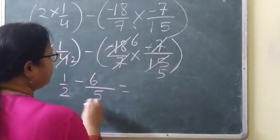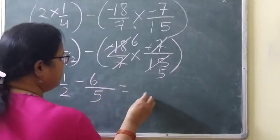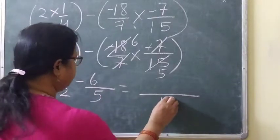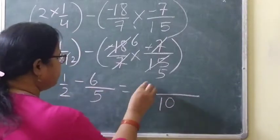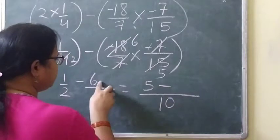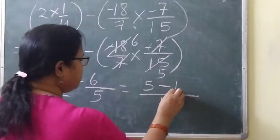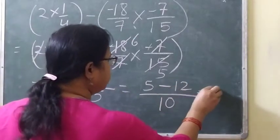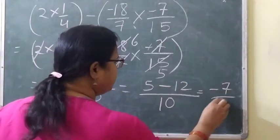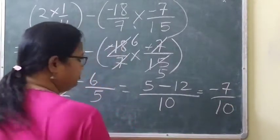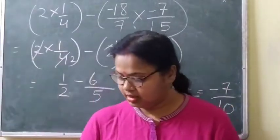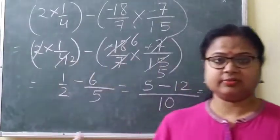Now we will take out the LCM. LCM is 10. Then two 5s are 10, so we get 5; five 2s are 10, and six 2s are 12. So we get minus 5 plus 12, giving minus 7 by 10. So the answer is minus 7 by 10.